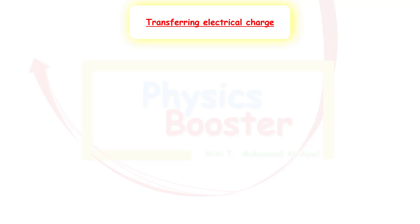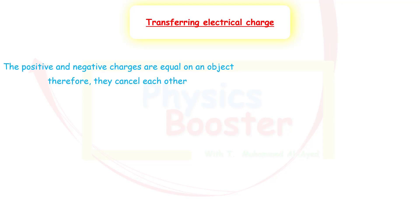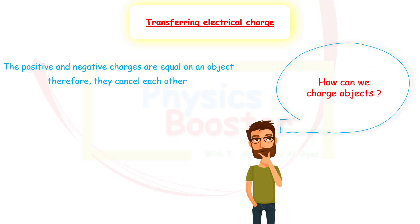Now let's look at transferring electrical charges, or creating static electricity. We know that positive and negative charges are always equal in an object, so they cancel each other out — any object you're holding right now has no net charge. So how can we charge these objects? One of them must end up with either more negative charges or more positive charges. Since protons and neutrons do not move, we count on electrons to move from one object to another.